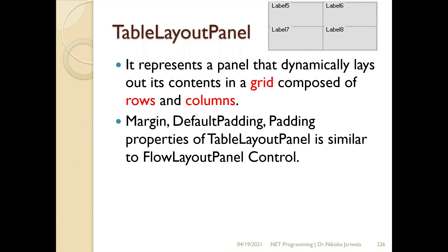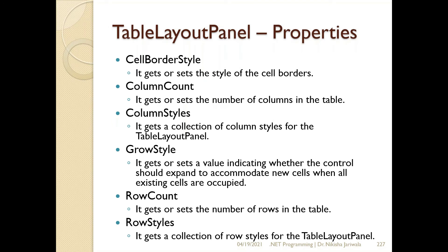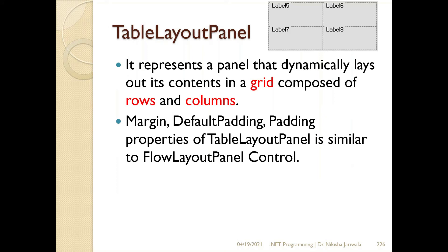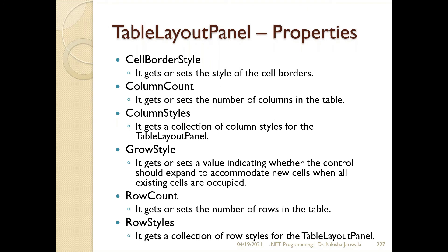TableLayoutPanel and FlowLayoutPanel share similar properties such as margin, default padding, and padding. But TableLayoutPanel has additional properties related to columns and rows that we need to set. The first property is cell border style — we can set the border style for individual cells.